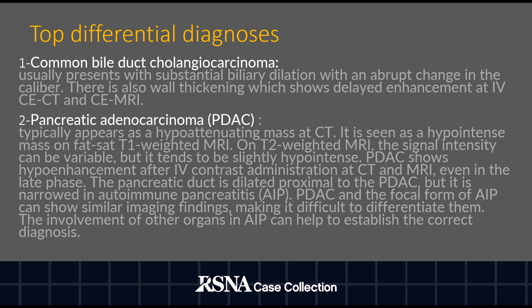The pancreatic duct is dilated proximal to the pancreatic adenocarcinoma, but is narrowed in autoimmune pancreatitis. Pancreatic adenocarcinoma and the focal form of autoimmune pancreatitis can show similar imaging findings, making it difficult to differentiate them. The involvement of other organs in autoimmune pancreatitis can help to establish the correct diagnosis.